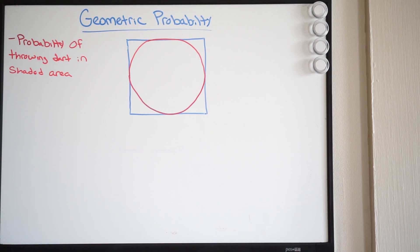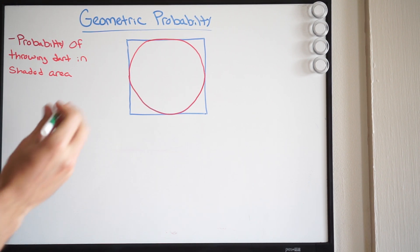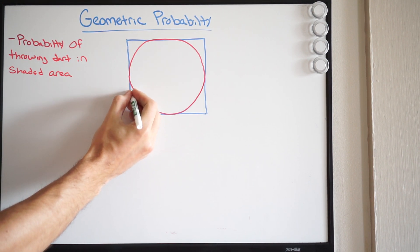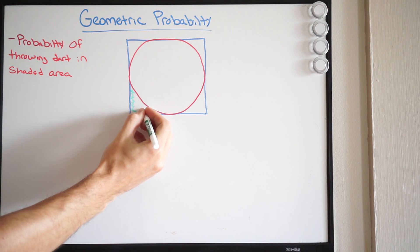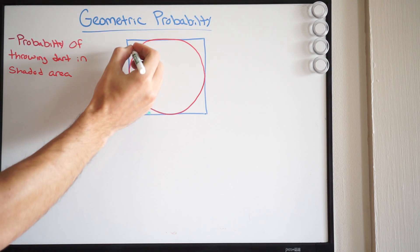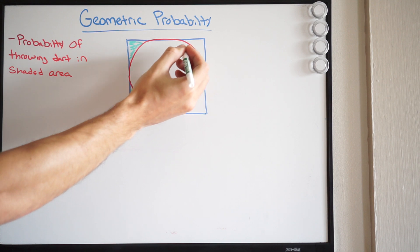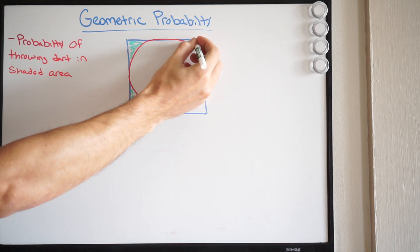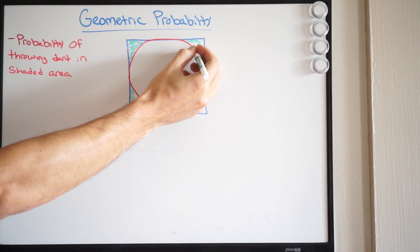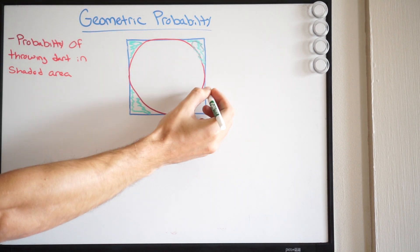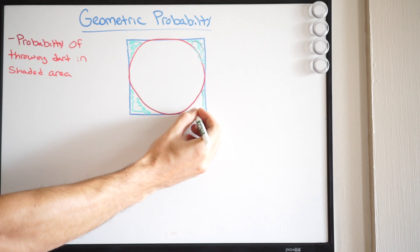The question is asking the probability of throwing a dart in a shaded area. They're talking about this area outside of the circle. So they want to know the probability — if you were to throw a dart, what would the probability be of landing in this shaded area?